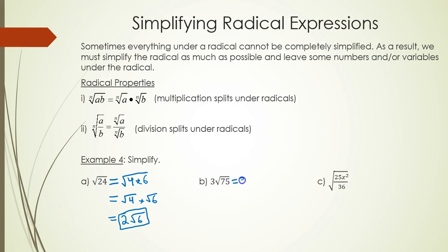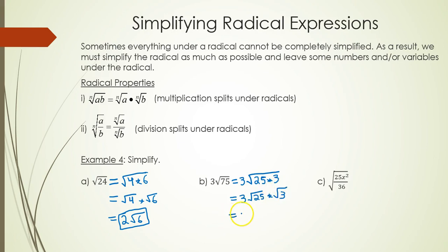Part B: the square root of 75 with a 3 out front. 75 is not a perfect square, but it is divisible by 25. Rewrite 75 as 25 times 3. So this is 3 times the square root of 25, times the square root of 3. The square root of 25 is 5, so we have 3 times 5 times the square root of 3. In the end, this becomes 15 times the square root of 3.